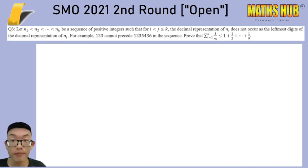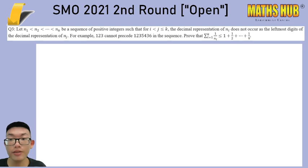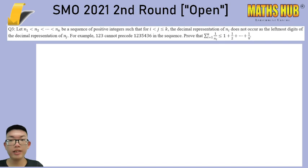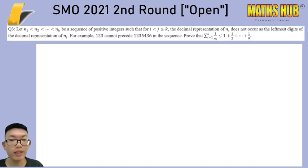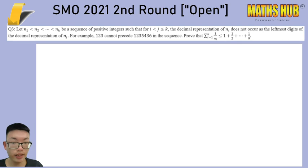Now on to question three. N1, N2 to Nk is a sequence of positive integers such that for i less than j less than or equal to k, the decimal representation of Ni does not occur as the leftmost digits of the decimal representation of Nj.